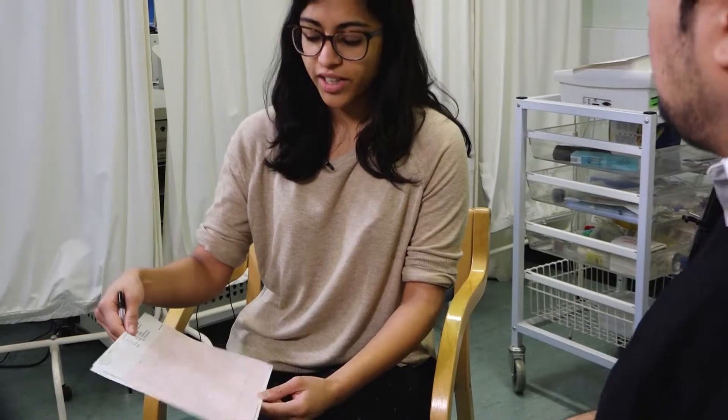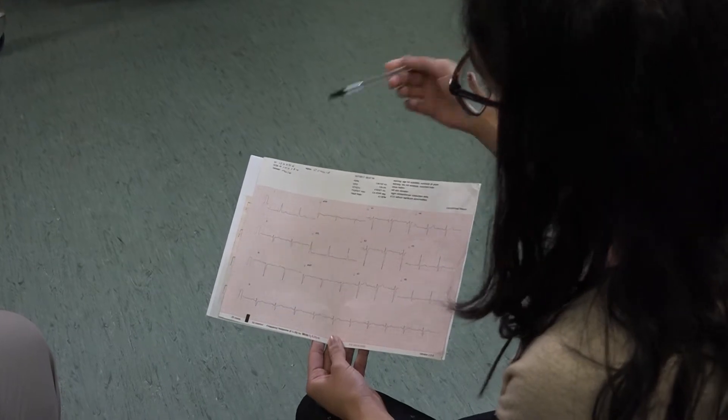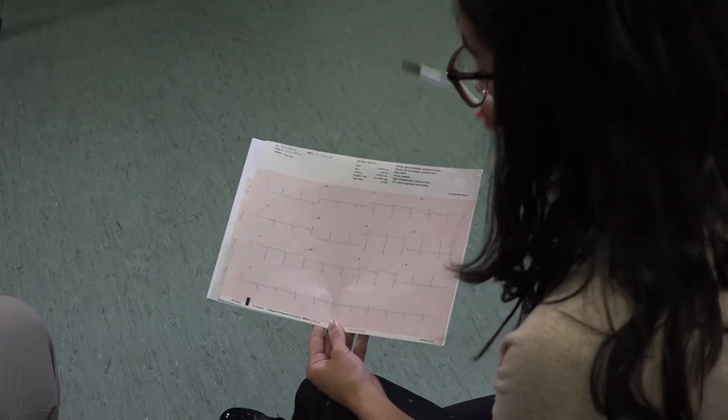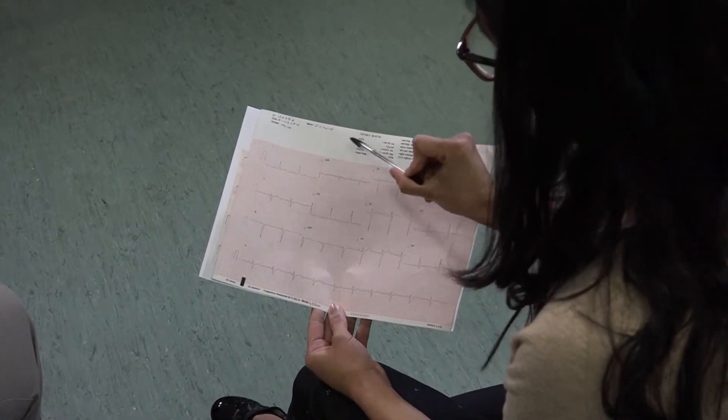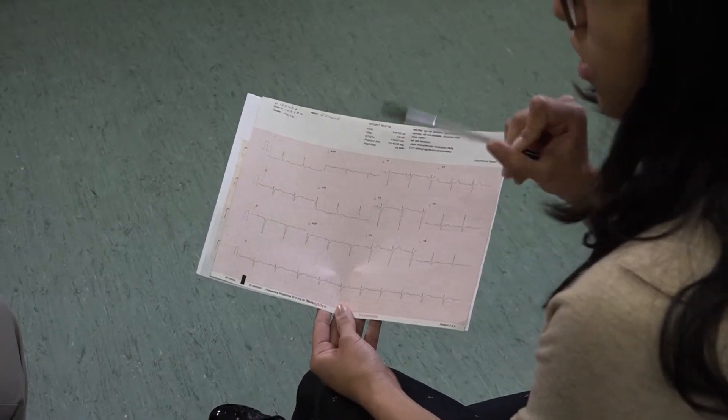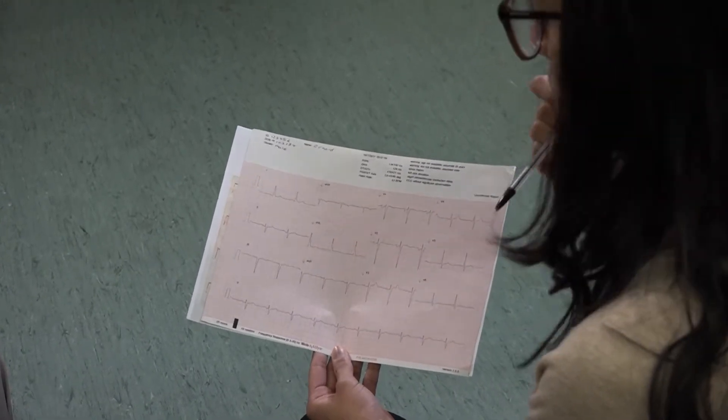First thing you want to check is whether your ECG is from the patient you've taken it from. You do that by confirming their name on the top and double checking their ID, date of birth, and gender. You also want to make sure that the date of the ECG is correct and it's the relevant one you want to interpret.